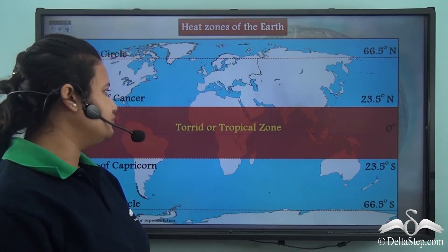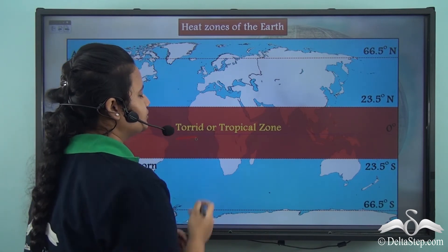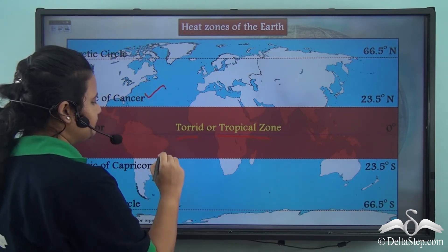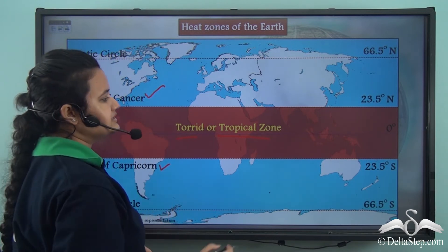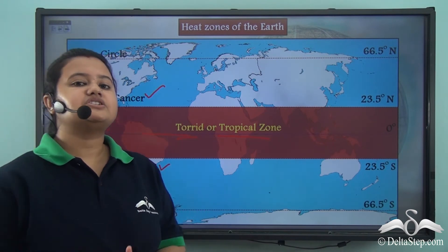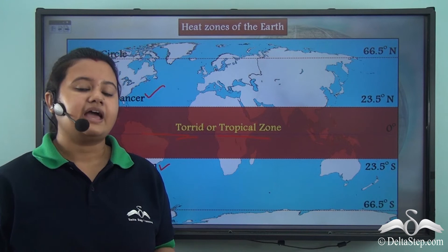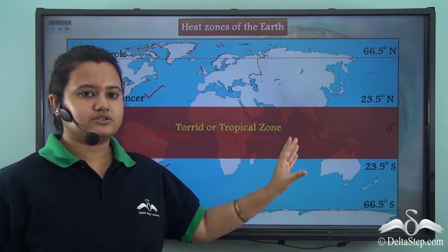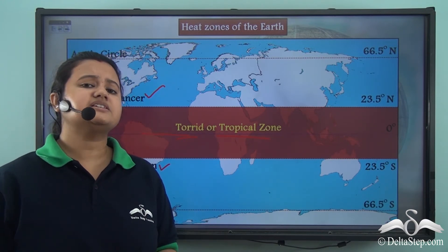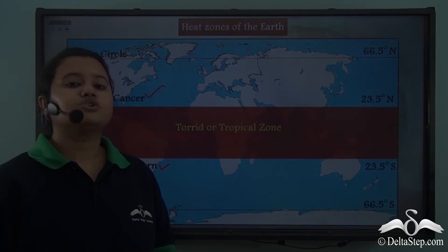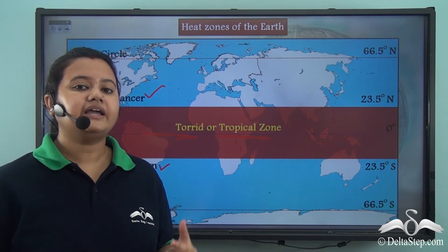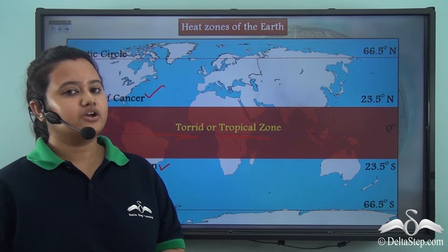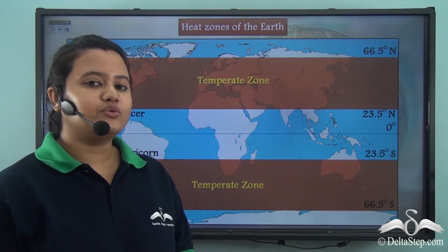The first heat zone is the torrid zone or tropical zone. It lies between the Tropic of Cancer and the Tropic of Capricorn, with the equator passing through the middle. This zone receives the vertical rays of the sun, and the amount of insolation — that is, solar radiation — received is maximum here. Due to these reasons, this zone experiences very high temperature throughout the year, and most of the equatorial rainforests are located in this zone.